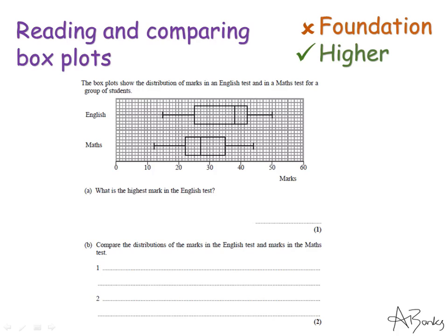So this question says what is the highest mark in the English test? This is quite a basic question. We should know that the lines on the box plots mean different things. So this line here is the lowest value recorded. This is the highest value.